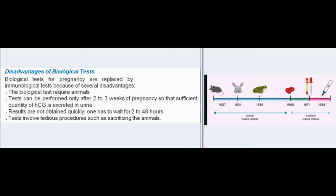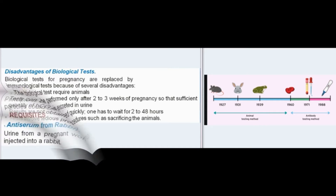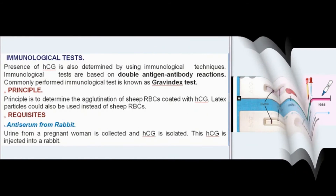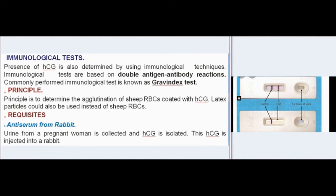The presence of HCG can also be determined by using immunological techniques. Immunological tests are based on double antigen-antibody reactions. The commonly performed immunological test is known as the Gravindex test.